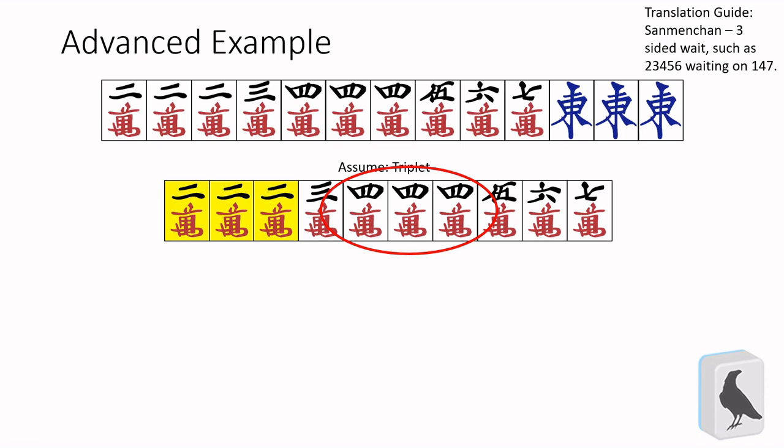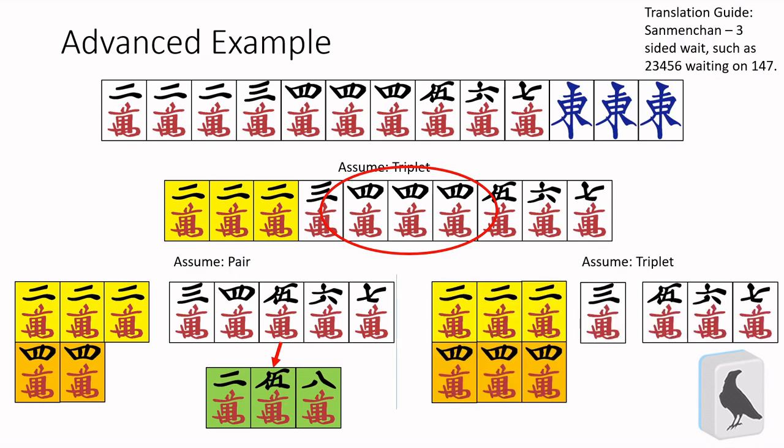When the two-mon is a triplet and the four-mon as a pair, the rest of the shape comes out to be a nice sanmenchan, waiting on the two-five-eight-mon. So this shape waits on the two-five-eight-mon. And lastly, we can't forget about isolating both of them as a triplet. That gives us the last tile we're waiting on, just the three-mon as a pair wait.